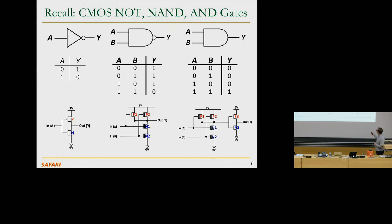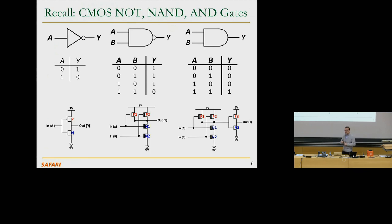NMOS transistors are good at pulling down the output to zero volts — pulling down means pulling the value on the wire to zero volts — that's why they're placed at the bottom as a pull-down network, connected to ground. PMOS transistors are good at pulling up the output to three volts, so they're placed up top. When you connect things with PMOS transistors on top and NMOS at the bottom, you get inverting logic. If you could do it the opposite way, you could get non-inverting logic, but the transistors just don't work that way — they're not good conductors in that configuration.